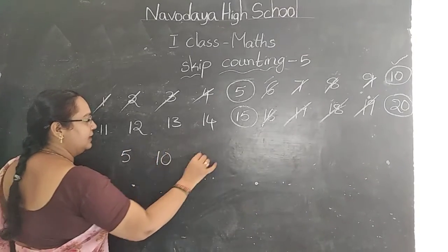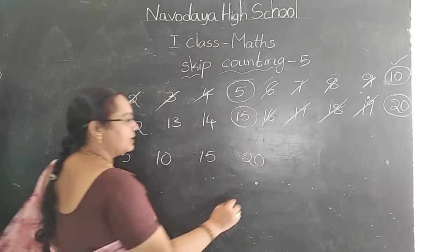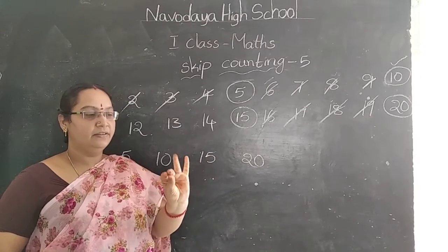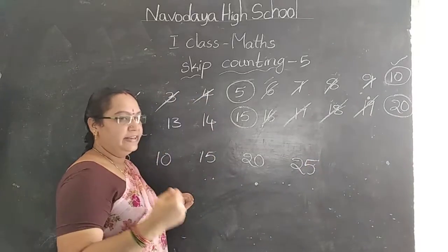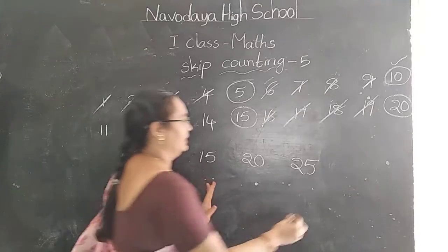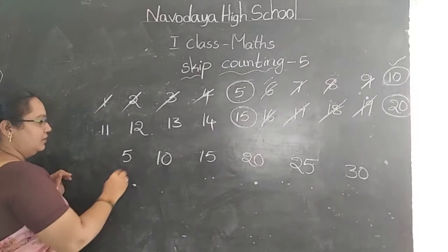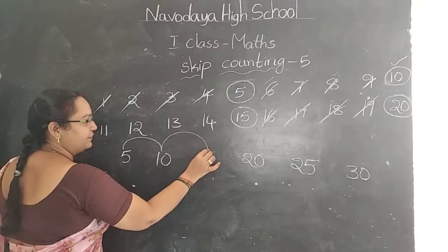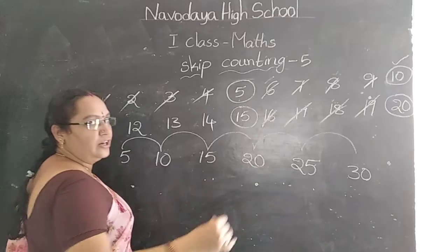Skip counting of 5: 5, 10, 15, 20. Next number: 25. Next: 30. 30 is counted. 5, 10, 15, 20, 25, 30, 35, 40, 45.